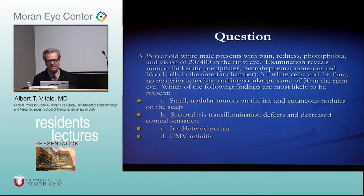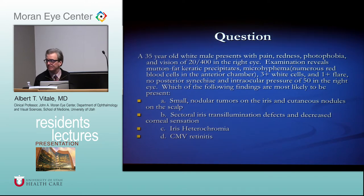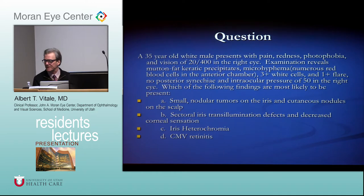A 35-year-old white male presents with pain, redness, photophobia, and poor vision in his right eye. He has mutton fat KP, microhyphema, hyphema, blood cells and white cells in his anterior chamber, one-plus flare, posterior synechiae, and high pressure. The constellation of high pressure, sectoral iris atrophy, and possible granulomatous or non-granulomatous KP points toward herpes. Herpes can produce iris ischemia, hyphema, and bleeding in the eye.